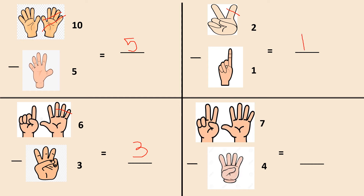Then in this picture, you can see how many fingers are there — one, two, three, four, five, six, seven. Seven fingers which are open, so I have written seven over here. In this picture, how many fingers are open? One, two, three, four — so I have written four over here. Seven minus four means from seven fingers, I have to remove four fingers. So I have removed four fingers and I am left with one, two, three. My answer would be three.